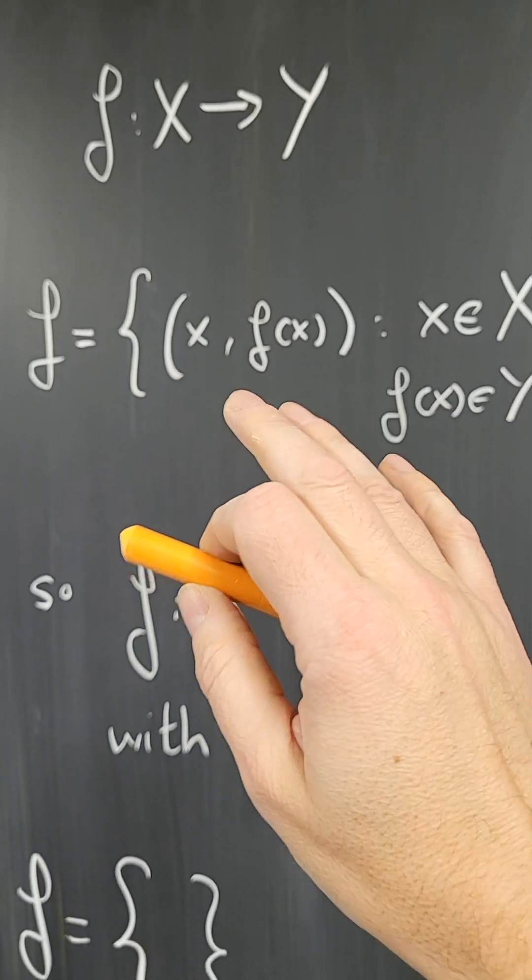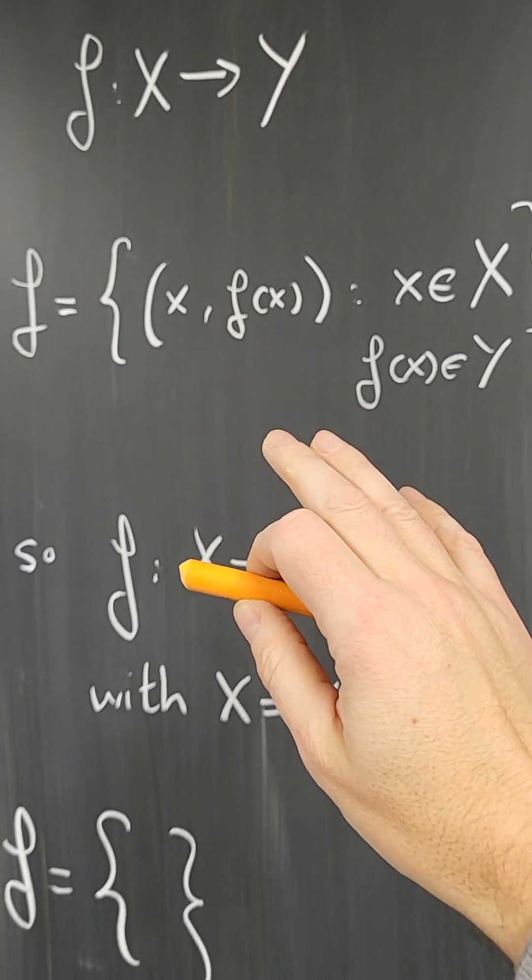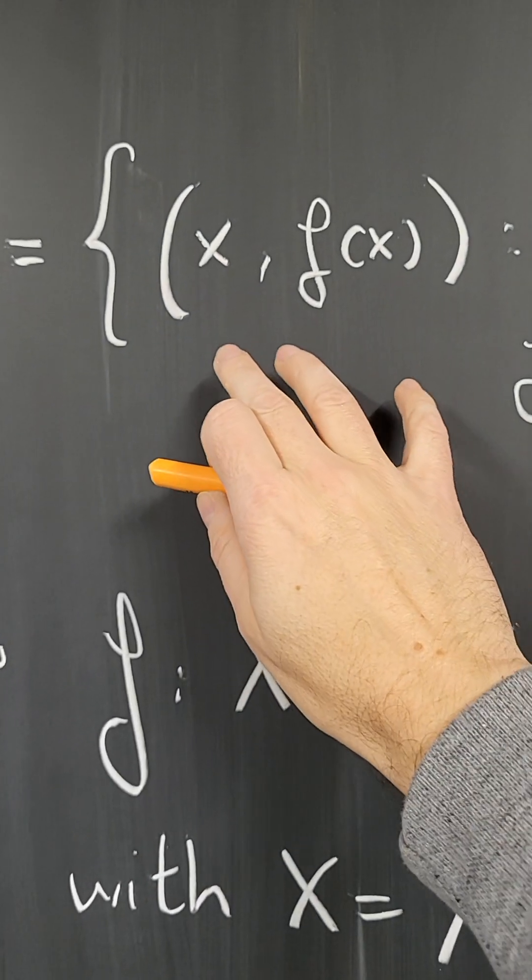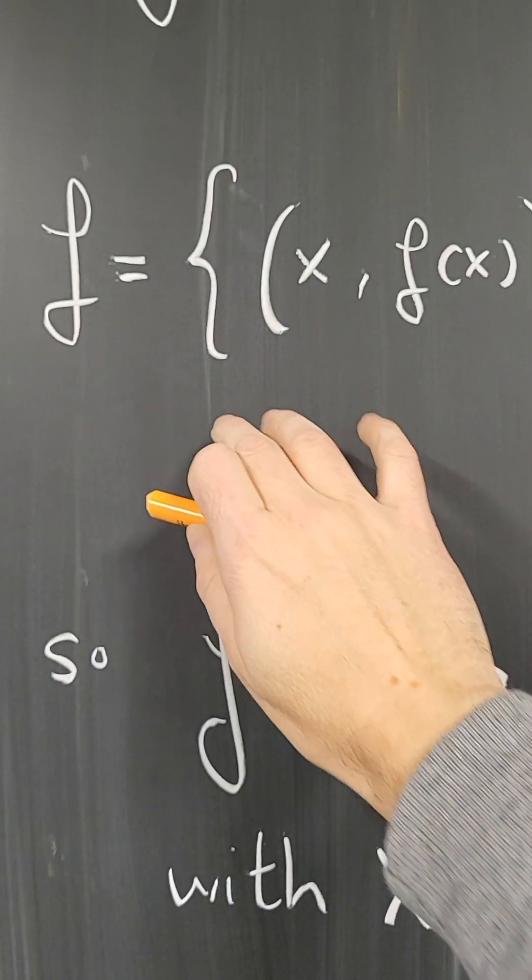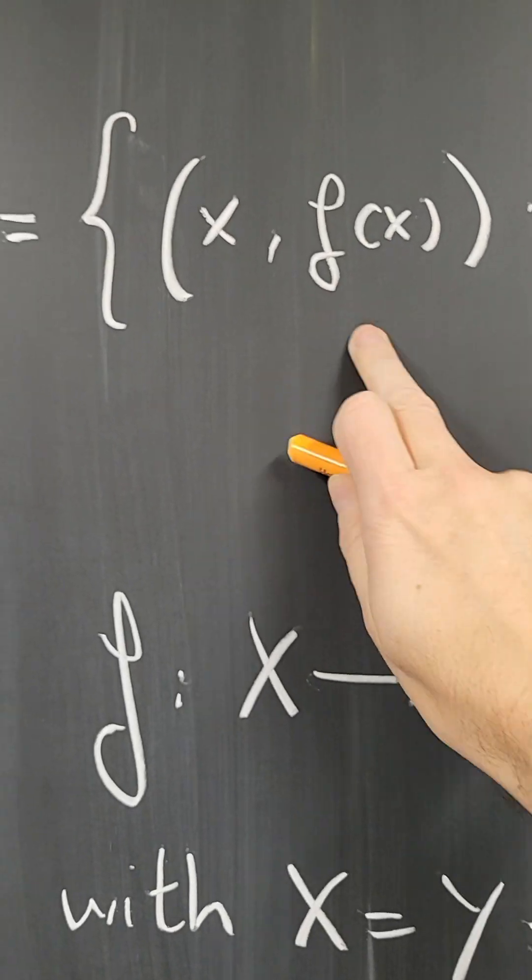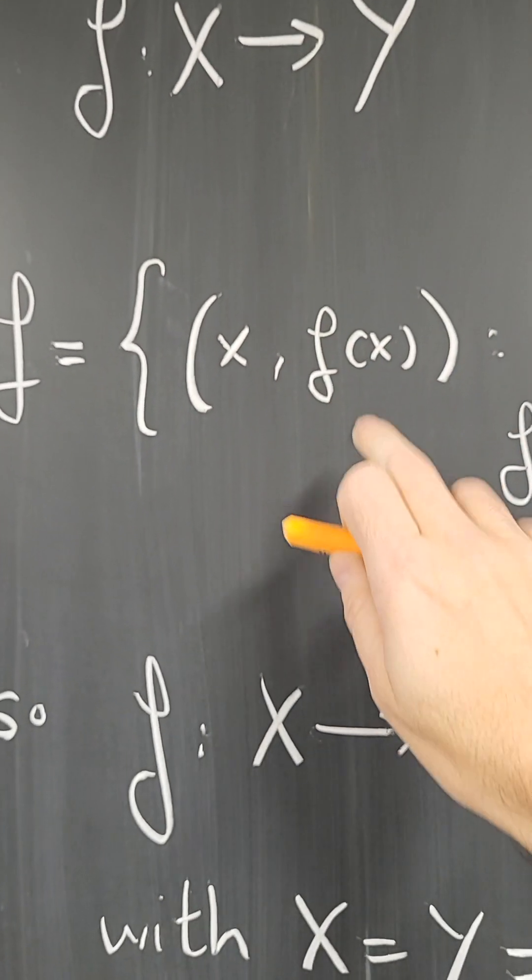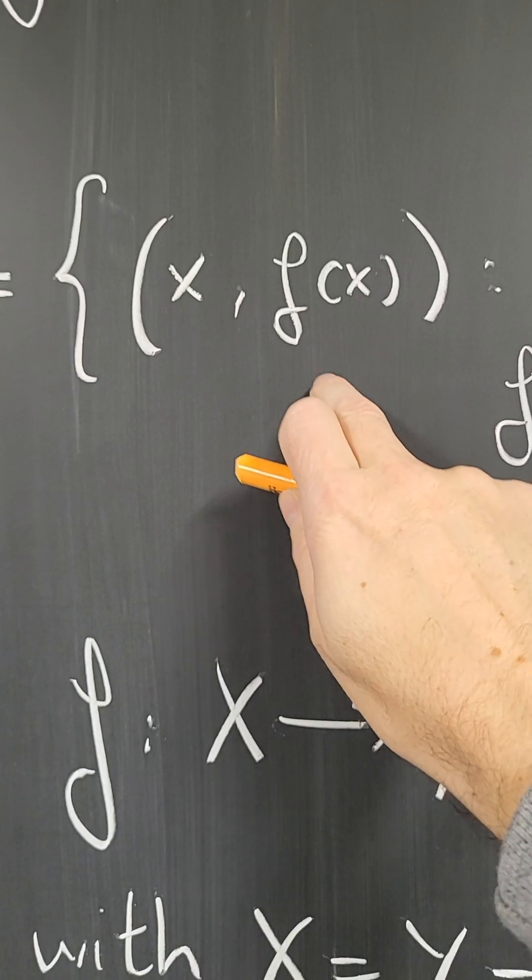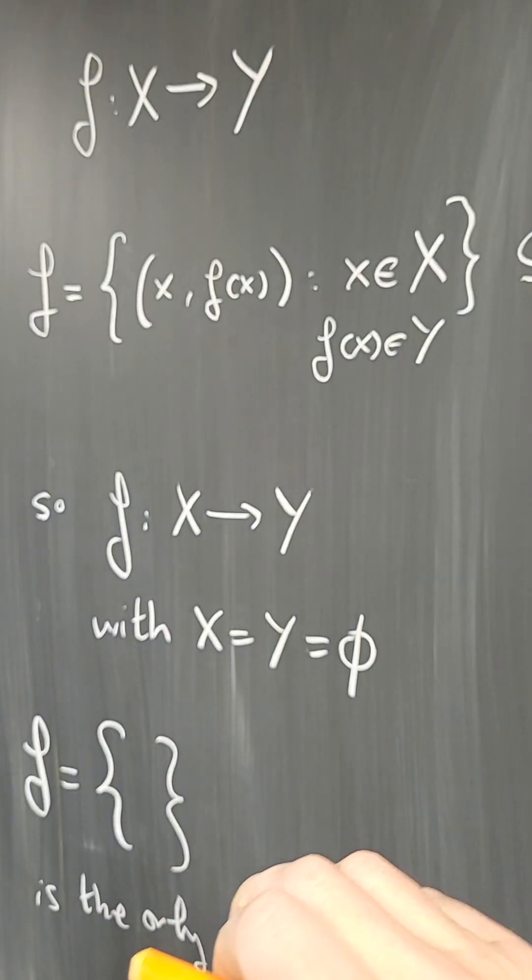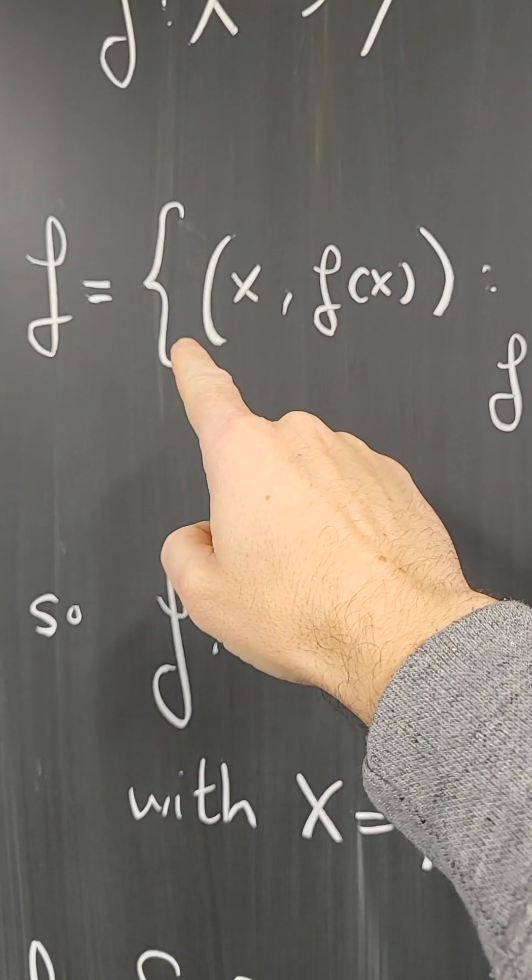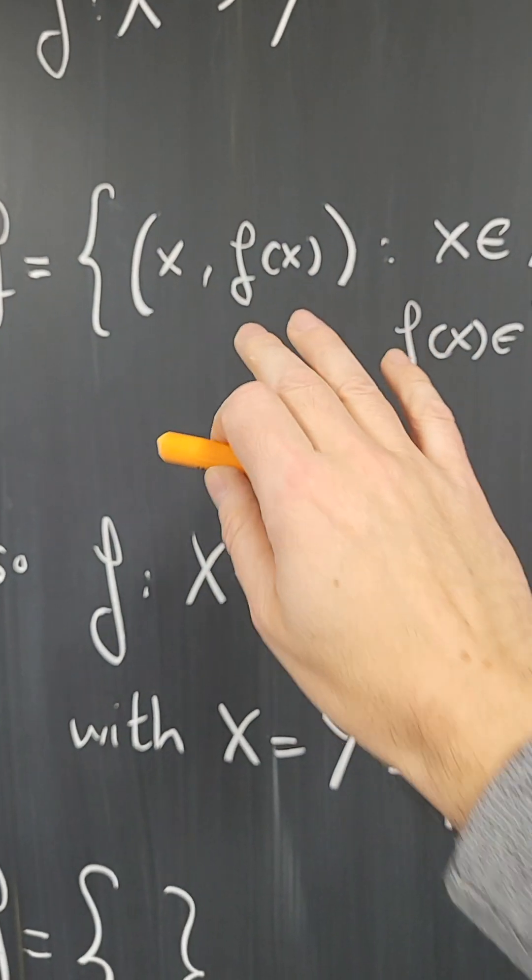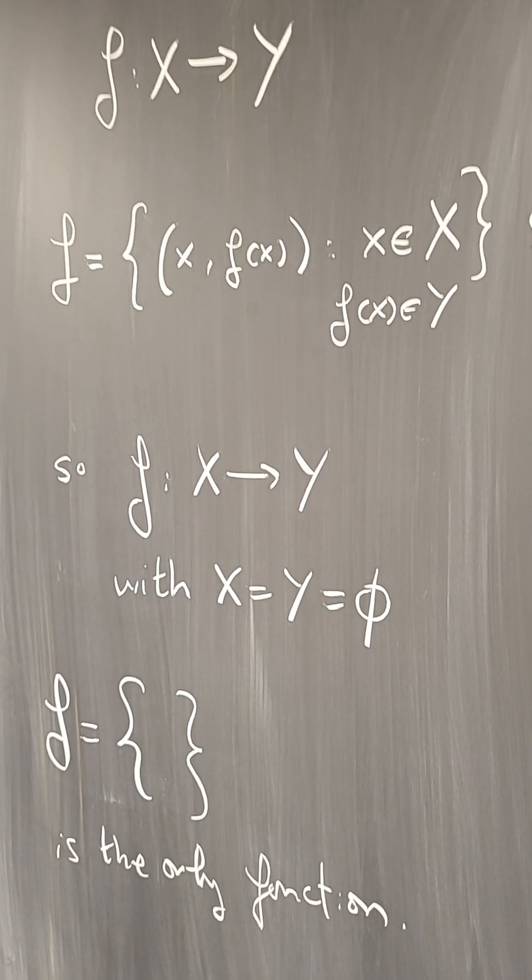So I think it would actually make much more sense to define a function to require that a function has at least one ordered pair in the set, so that I am actually saying something about what the rule f is that is sending elements of x to y. If I cannot even say anything about that rule, that should not be a function. So my condition to be a function is that the function, the subset of x cross y, has to have at least one element. It cannot be the empty set to be a function.